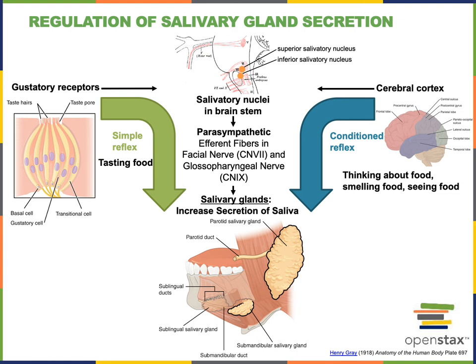In response to food detected by the gustatory receptors, the superior salivatory nucleus activates parasympathetic efferent fibers in the facial nerve, leading to increased saliva secretion from the submandibular and sublingual salivary glands. The inferior salivatory nucleus will activate parasympathetic efferent fibers in the glossopharyngeal nerve, leading to stimulation of the parotid salivary gland to produce an increased volume of saliva secretion.